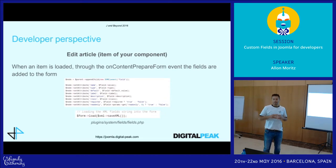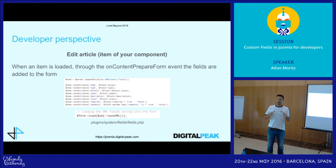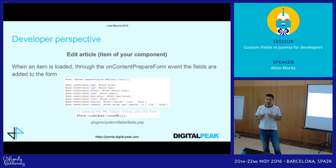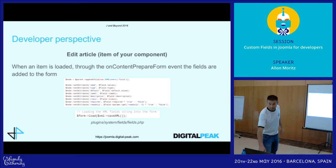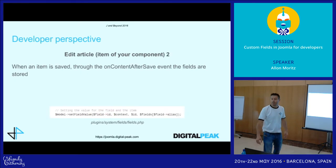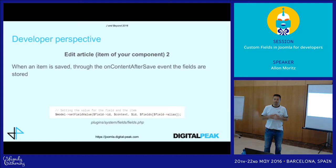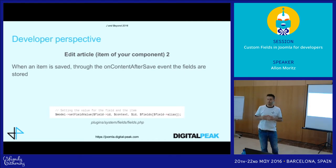Now comes the interesting part — editing the article or item of your component. On the onContentPrepareForm event, it transforms your previously created fields into an XML string, which is then loaded into the form. When the user hits Save, Joomla triggers various save events — we use the onContentAfterSave event to save the field value to the database.